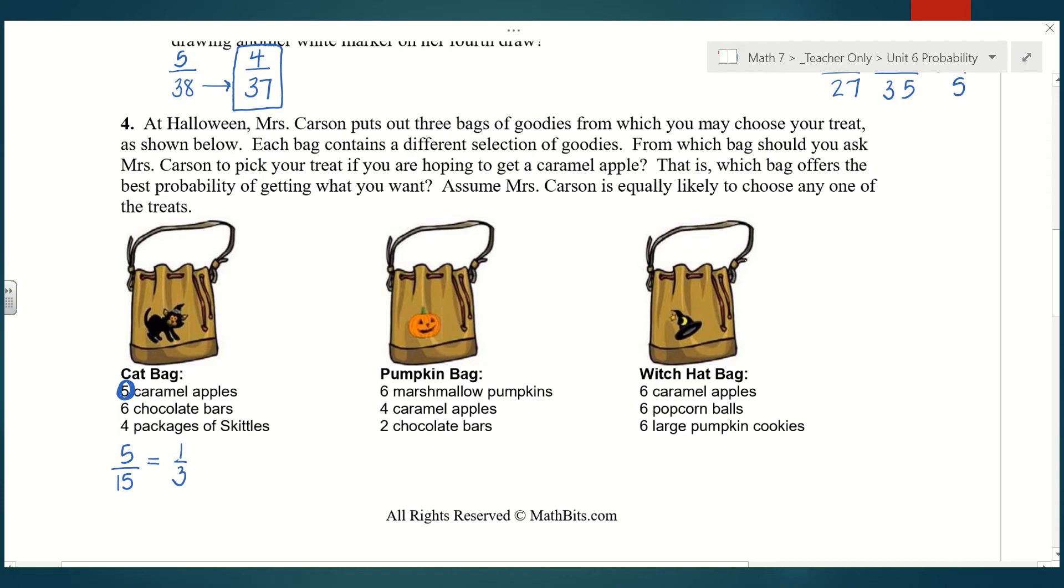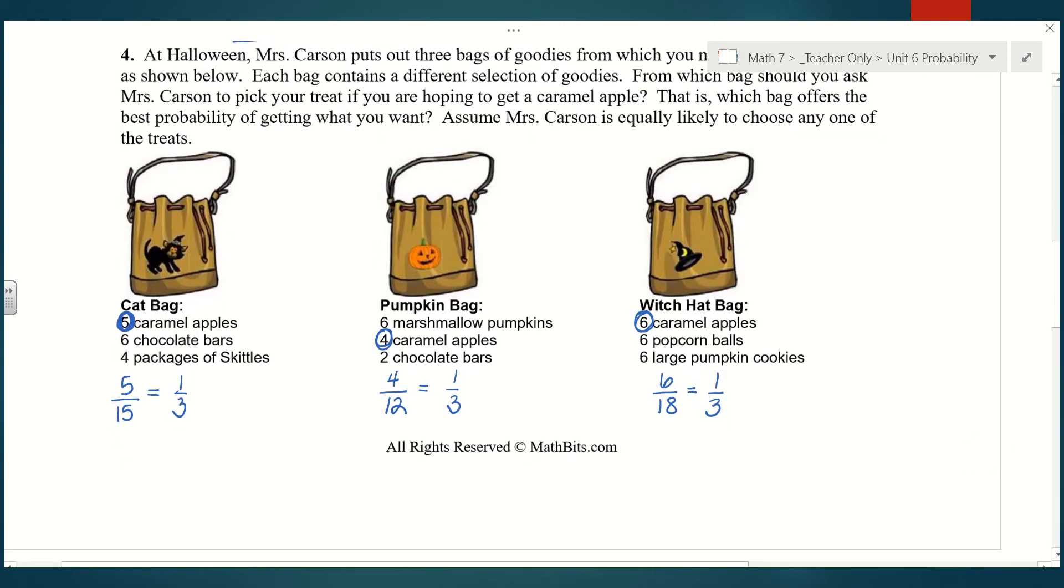The probability of getting a caramel apple from the cat bag is 1/3. In the pumpkin bag, I can see there are 4 caramel apples, so 4 out of the total number of treats in that bag, which is 12, also gives us a probability of 1/3. For the witch hat bag, it looks like we have all equally likely outcomes here, so 6 out of 18, which also equals 1/3. So you're actually equally likely to choose a caramel apple from any bag. It really doesn't matter which bag you choose from, it's the same probability. So we're going to write, we are equally likely to draw a caramel apple from any bag.